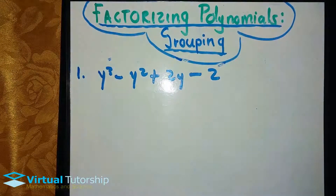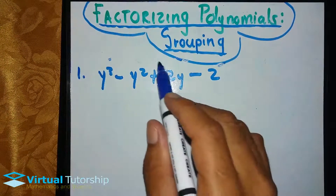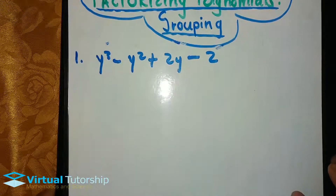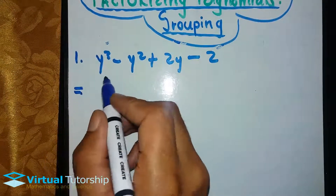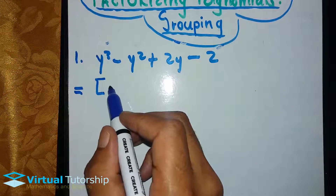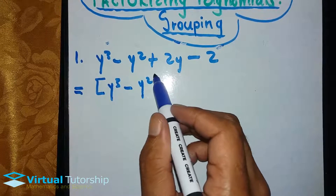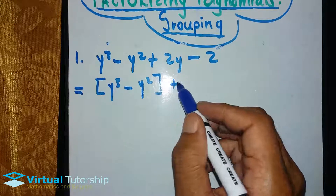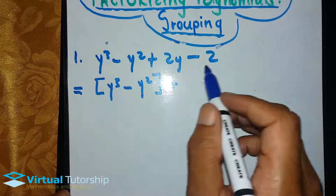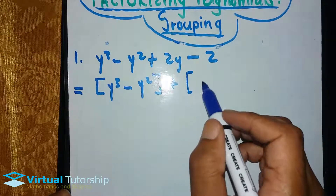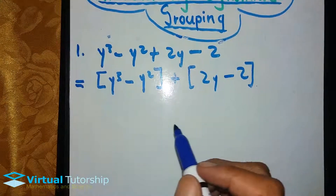So, with the grouping method, you can group in pairs or in threes. For this case, we are going to group in 2. In other words, y cubed and y squared are grouped together, and 2y and minus 2 are grouped together. We group them in pairs.